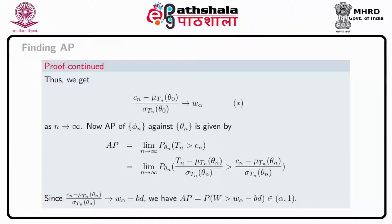The asymptotic power AP of phi_n against theta_n is given by the limit as n tends to infinity of the probability that T_n is greater than C_n under theta_n, which equals the probability involving T_n minus mu(T_n, theta_n) divided by sigma(T_n, theta_n). Since C_n minus mu(T_n, theta_n) divided by sigma(T_n, theta_n) goes to W_alpha minus B*D as n tends to infinity, using assumptions A3 to A5 and A1, we have AP equal to probability that W is greater than W_alpha minus B*D, completing the proof.